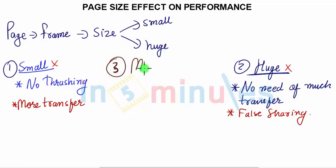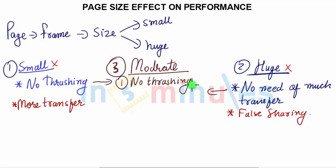Let's call it the third option. In our case, we call it moderate. If we keep moderate size, we have the advantage of no thrashing and no need of transfer at the same time. That means it has two advantages: no thrashing, meaning the page is just big enough to store data of only one process, plus not much transfer.